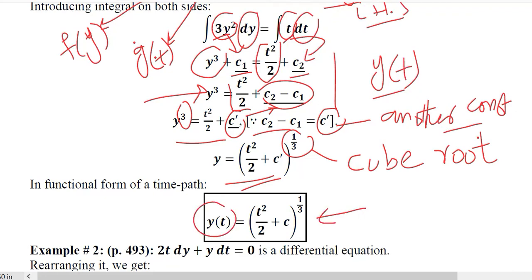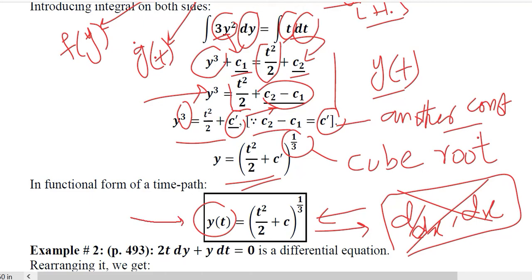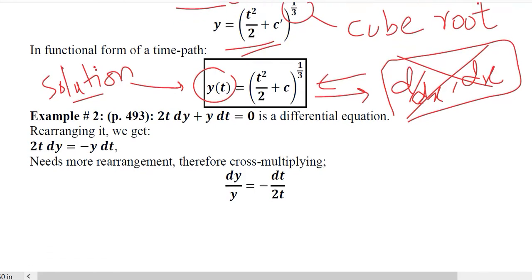This cube root is now helping us to get the final form, y = ∛(t²/2 + c). So the time path will be y in terms of t. We have solved the differential equation because you cannot see any derivative or any differential here. If they are dissolved, it means that it is actually a solution or the time path. This is a very simple method simply by using integration.